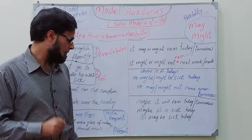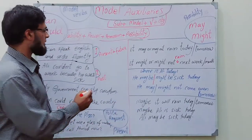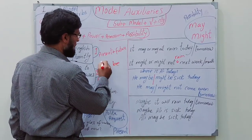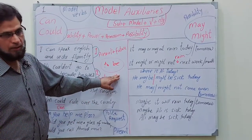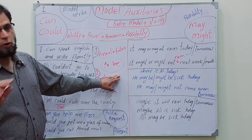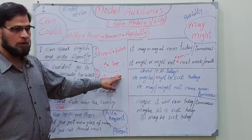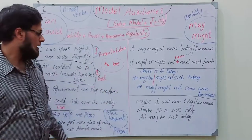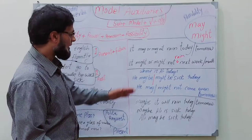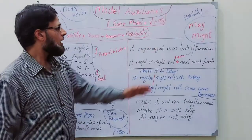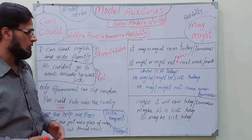Regarding the use of 'be': 'be' is actually a short form of the helping verb 'to be.' When used in past context, it changes (was/were/will be/should be etc.). May and might can both be used for possibility and for permission as helping verbs.